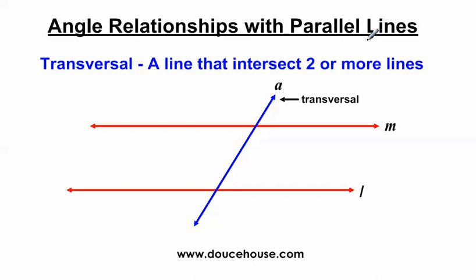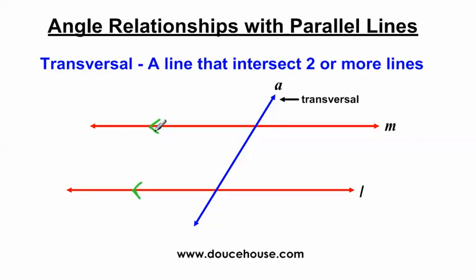We're talking about parallel lines today. Which lines are parallel to each other? Well, line M and line L look like they're parallel, but I'm not 100% certain because there's no statement saying that they're parallel. A way to indicate lines are parallel in geometry is to give them arrows. Line M and line L are parallel to each other because they have the same number of arrows. If one line had one arrow and another had two arrows, these are not parallel because they don't have the same number of arrows on each line.